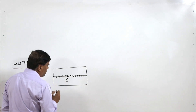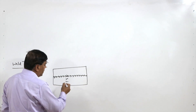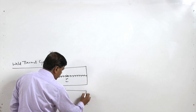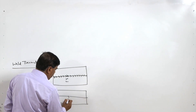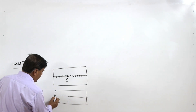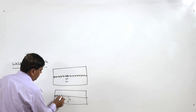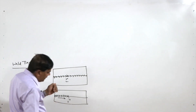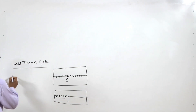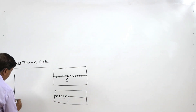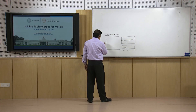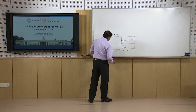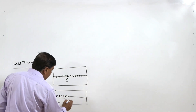If we try to measure the variation in temperature at these three locations during welding, we see a continuous change in temperature. The heat source starts moving and as it approaches points 1, 2, and 3, these points begin receiving heat and there is a rise in temperature. This variation in temperature as a function of time can be plotted with temperature on the y-axis and time on the x-axis, from the beginning to the end of welding.